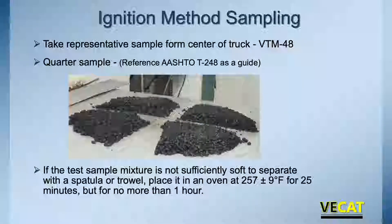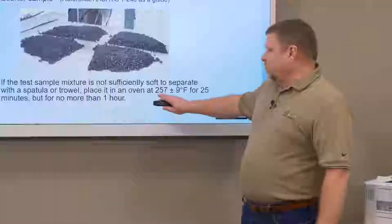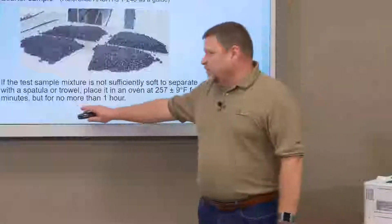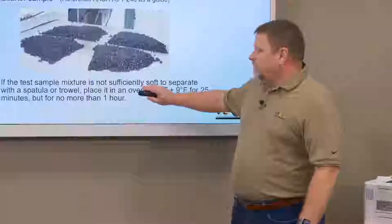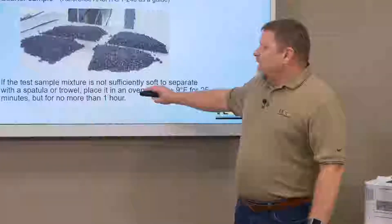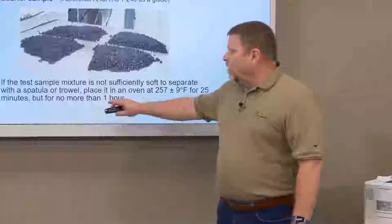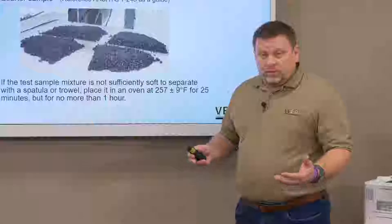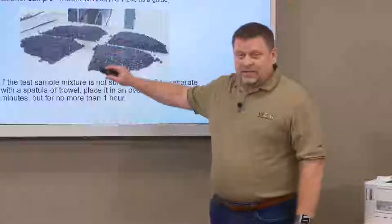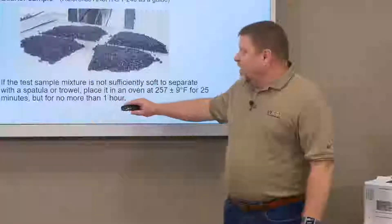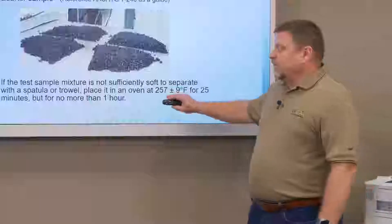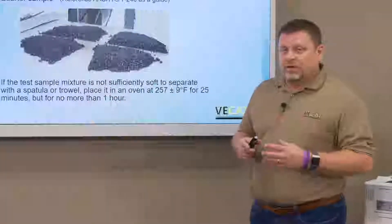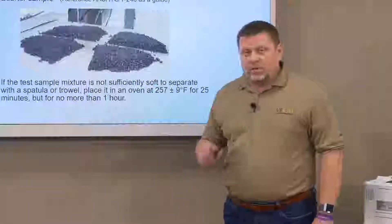If your sample has cooled down and is now hard, you have to reheat it in an oven at 257 plus or minus 9 degrees Fahrenheit for 25 minutes, but not more than one hour. This is a really narrow temperature and time range. The reason for such tight limits is that if we heat samples too long or too hot, we can start driving off light-end oils, which are part of the asphalt binder content. This specification for reheating is often overlooked.